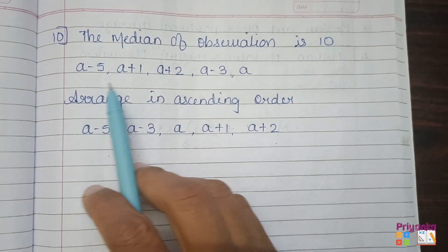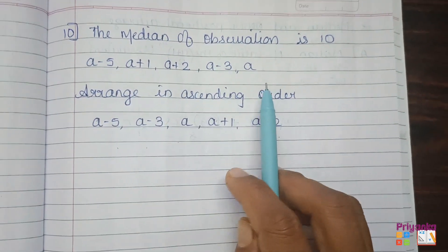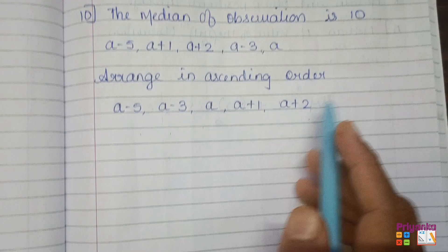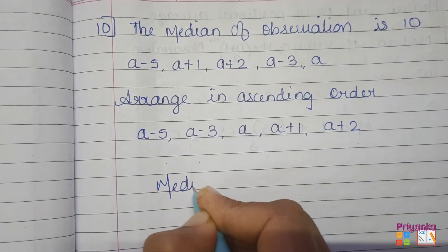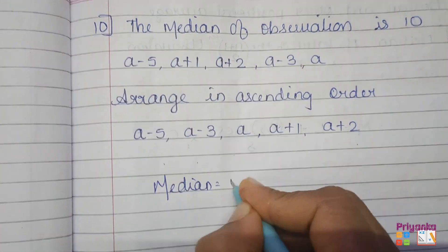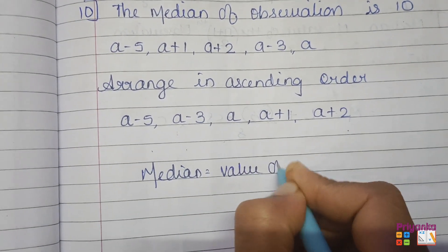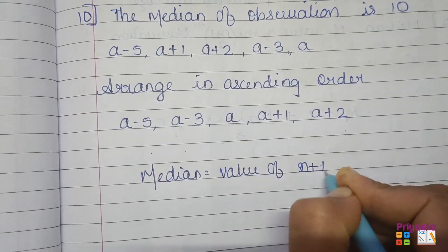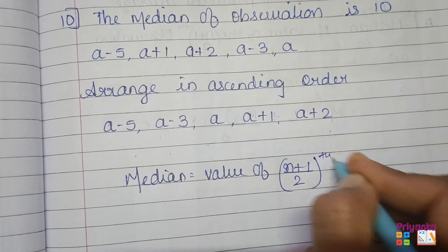By looking at this we can give the answer directly. The median of observation is 10. But I will show you the solution as this information is given in raw data. The formula to find out median for raw data is value of n plus 1 divided by 2, the observation.